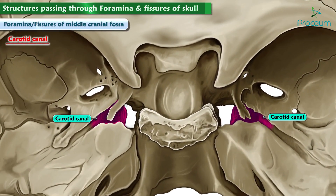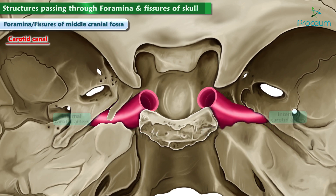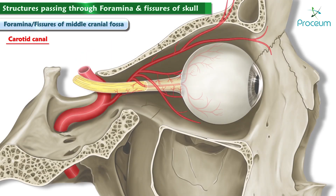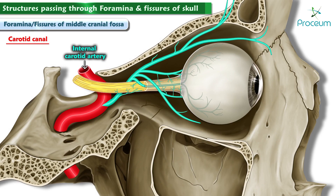The carotid canal lies posterior and lateral to the foramen lacerum. It allows the internal carotid artery, one of the major blood supplies to the brain, to enter into the skull. Branches of the internal carotid also supply blood to the eye, the contents of the orbit, and the forehead.